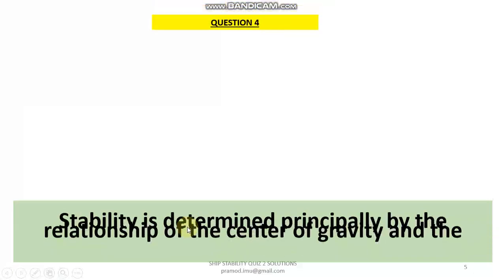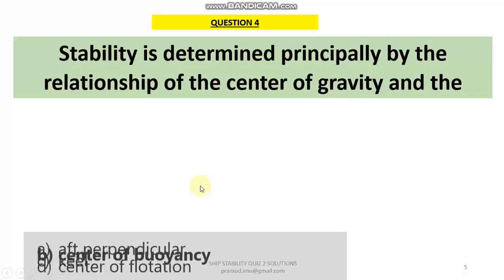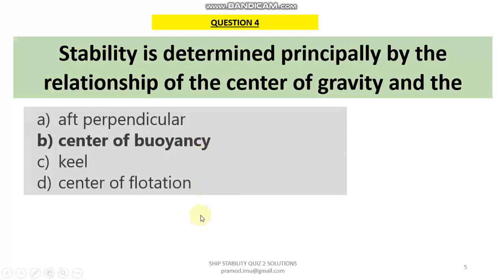Question 4: Stability is determined principally by the relationship of the centre of gravity and, from the answers given, the right answer is the centre of buoyancy. The relationship between the centre of buoyancy and the centre of gravity is what determines your stability, and this is something we need to keep in mind when loading or unloading a ship.